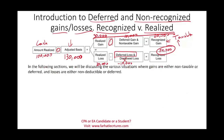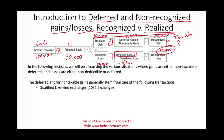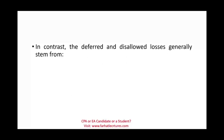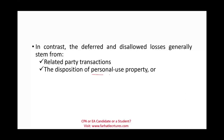We're going to look at a list of transactions that create deferred gains and deferred losses. Deferral and non-taxable gains generally stem from: qualified like-kind exchanges (1031 exchanges), involuntary conversions, the sale of a principal residence, divorce property settlements, installment sales, and treasury stock and capital stock transactions. In contrast, deferred and disallowed losses generally stem from: related party transactions, the disposition of personal use property — where by law you cannot take the loss — and wash sale transactions.